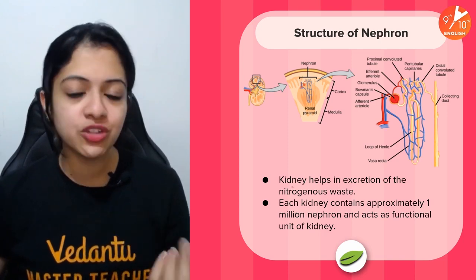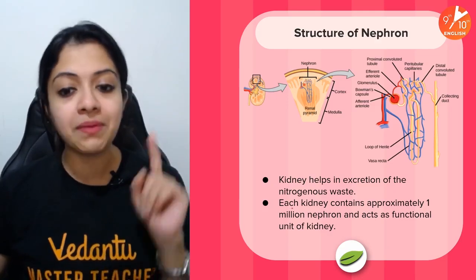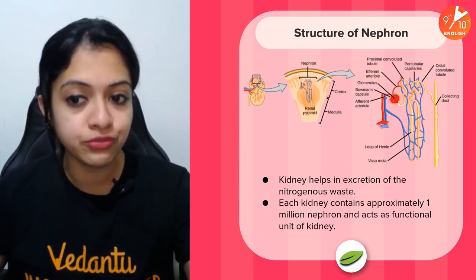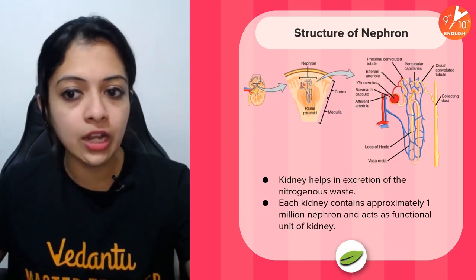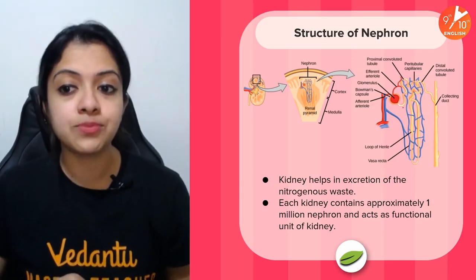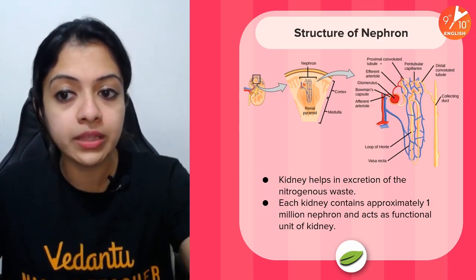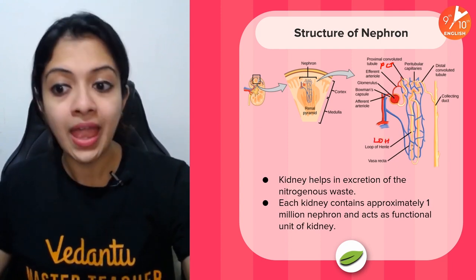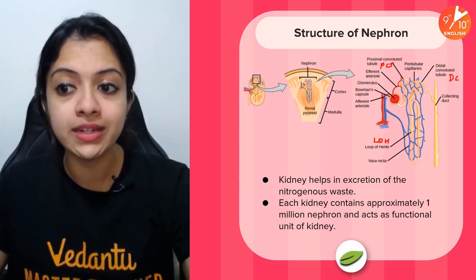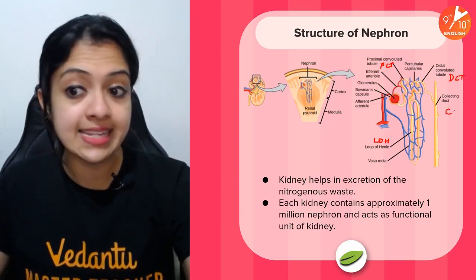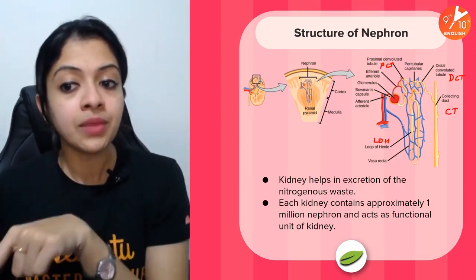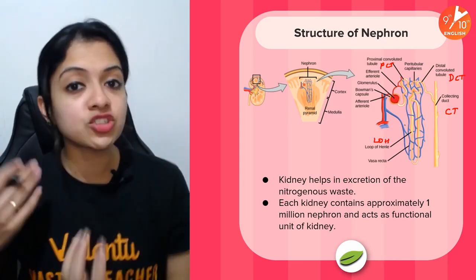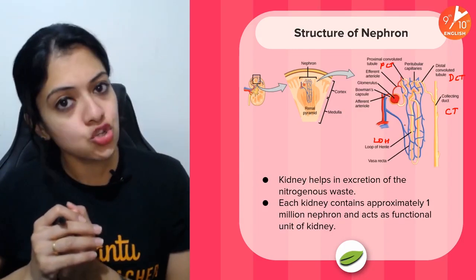The kidneys help in excretion of nitrogenous waste and each kidney contains approximately 1 million nephrons which act as a functional unit of the kidneys. Remember the major parts of the nephron: the Bowman's capsule with the glomerulus inside it, which is the tuft of blood capillaries. The Bowman's capsule is followed by the proximal convoluted tubule, also called the PCT. Then comes the loop of Henle, followed by the distal convoluted tubule or DCT, and then the collecting duct. Around the entire nephron there are also peritubular capillaries which run in parallel, and exchange of matter happens between that blood and the tubular parts of the nephron.